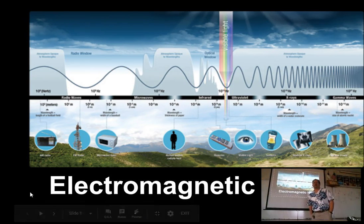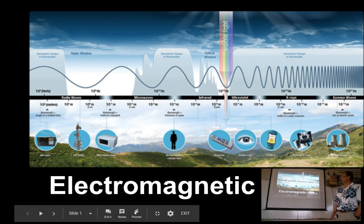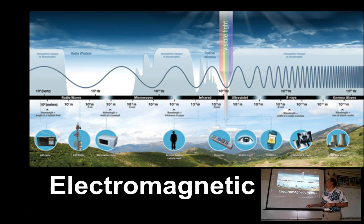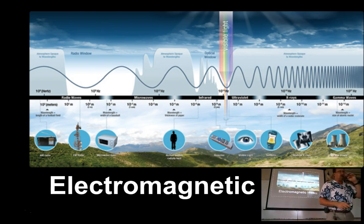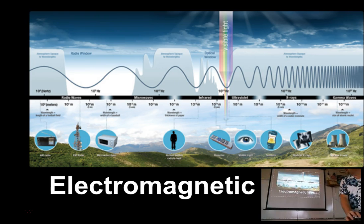Today we are going to be talking about the electromagnetic spectrum. We're jumping into a new chapter here, and this will be your introduction to all kinds of energy. You are most familiar with visible light, this narrow band of the electromagnetic spectrum that your eyes can detect. But we use all different parts of this spectrum for different purposes, and we're going to be exploring that today.